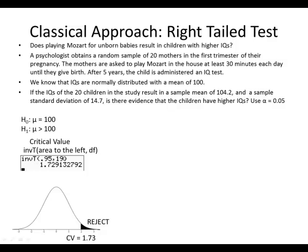We compute inverse T of 0.95 with degrees of freedom equal to sample size minus 1 — so 20 minus 1 gives us 19. Our critical value is 1.73. Since this is a right-tailed test, our shading is to the right. If our test statistic is greater than 1.73, we reject. If our test statistic is less than 1.73, we fail to reject.